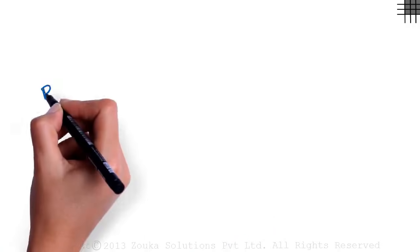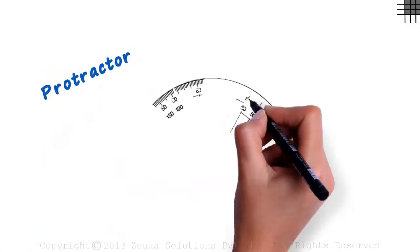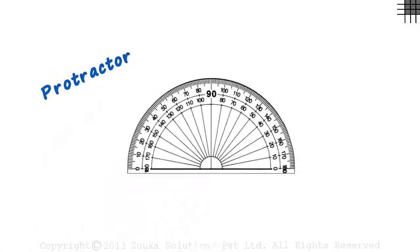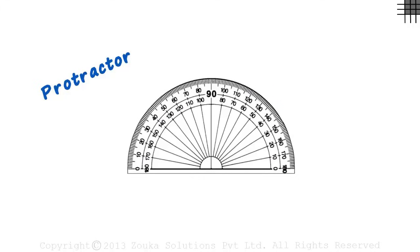How do we measure or draw angles in our notebook? We use something called a protractor, and it looks something like this. The numbers you see on the protractor are degrees. Let's see how we can measure angles using a protractor.